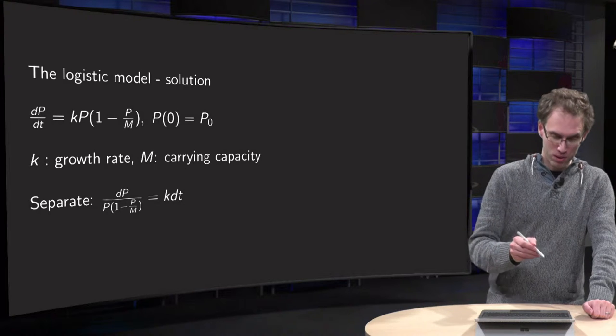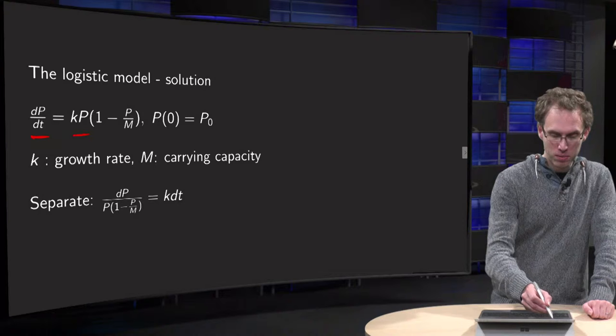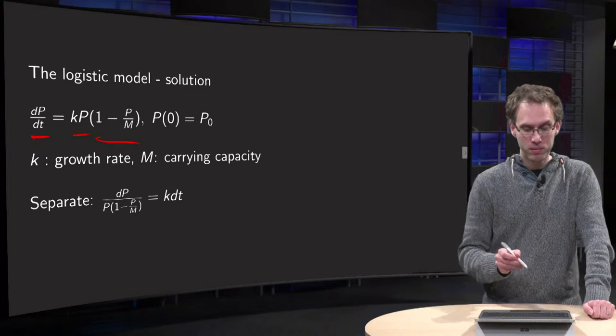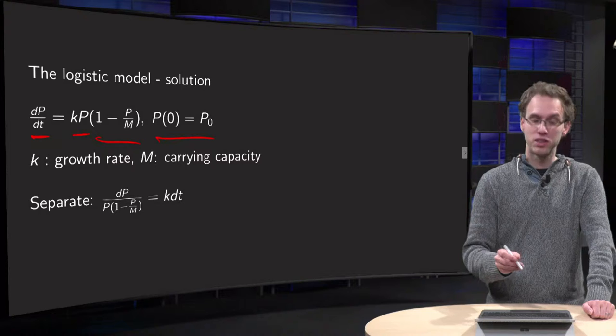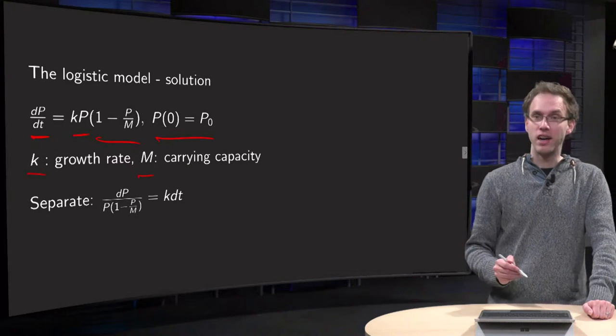So here we have our logistic equation: dP/dt equals k times P times (1 minus P over M), with some initial population, k is the growth rate, and M is the carrying capacity.